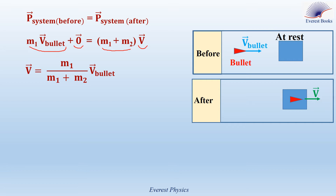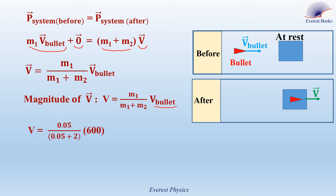We want to determine the magnitude of V. So the magnitude of V equals M1 over (M1 plus M2) times the speed of the bullet. Substituting M1 equals 0.05 kg, M2 equals 2 kg, V bullet equals 600 m per second, we get the speed of the system after collision, which is equal to 14.63 meters per second.